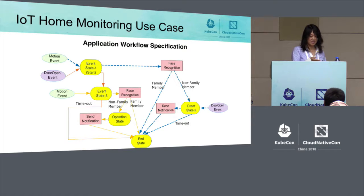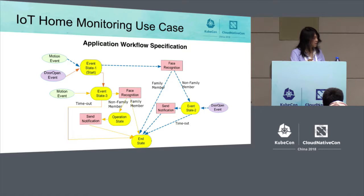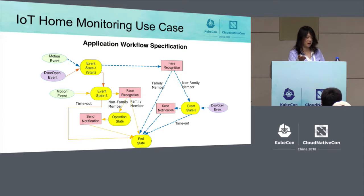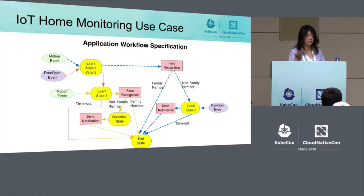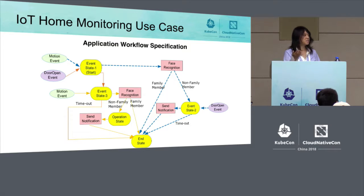Going back to event state one — the start state — if the door open event happens first, it will transition to event state three, where the workflow will wait for a motion event. When the motion event happens, it will trigger a face recognition function to run. Depending on the result, it either ends the workflow, or transitions to an operation state where — without waiting for any event — it triggers a function to send a notification to the police department and homeowner, then transitions to the end state.